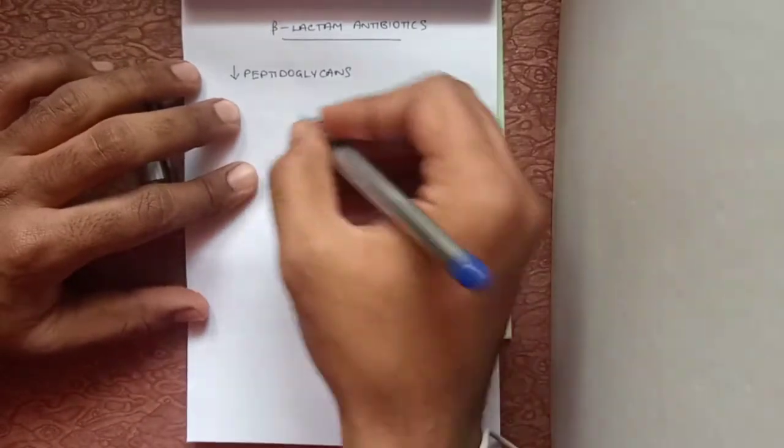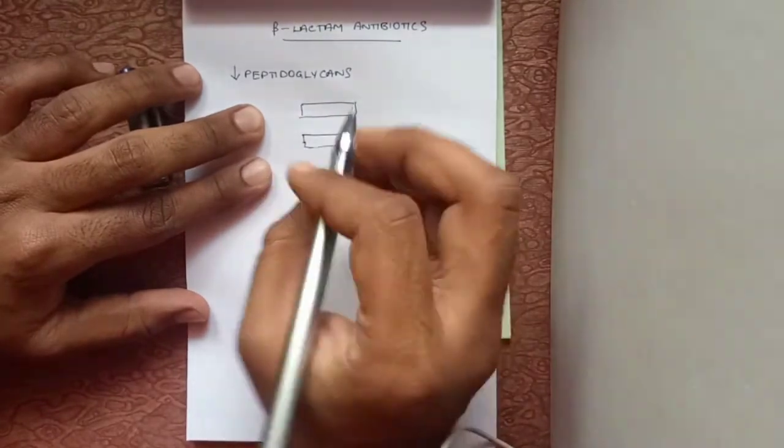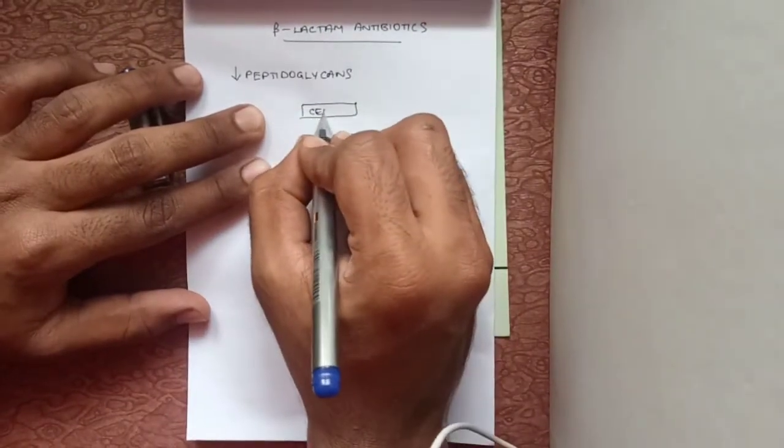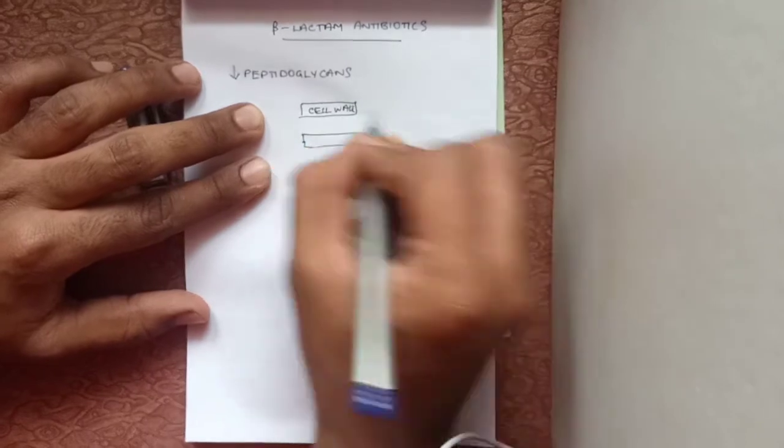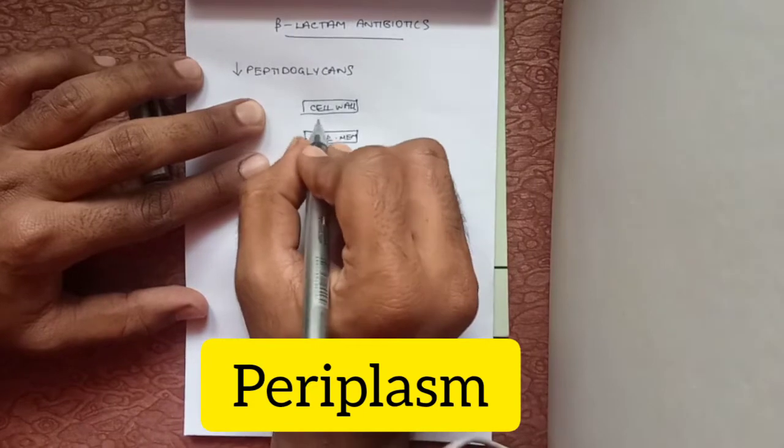Bacteria have a cell constituent with cell wall, cell membrane, and other components. Between the cell wall and the cell membrane, there is a layer called the periplasm.